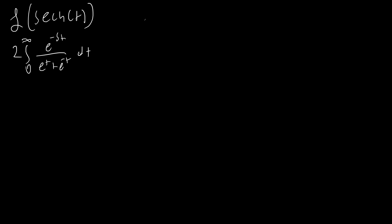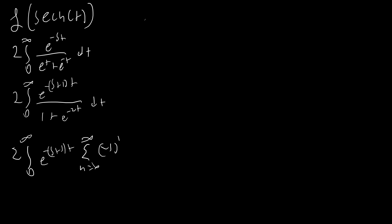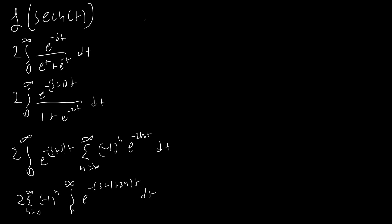We're going to plug in our formula directly. We want to use an infinite series to solve this because we have this e^{-t} right here. Since we're going from zero to infinity, e^{-t} is always less than or equal to one. So if we multiply by e^t on the top and bottom, we can use the power series for 1 over (1 plus x), which is valid when |x| ≤ 1. We multiply the top and bottom by e^{-t} and apply the power series, exchanging our sum and integral.